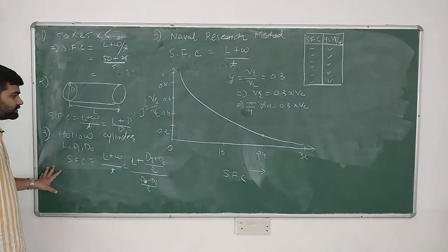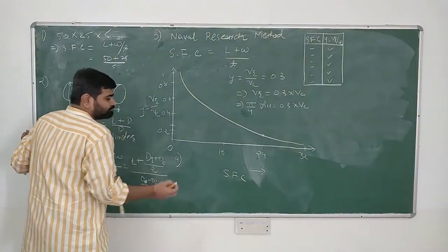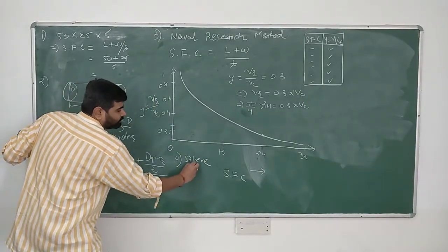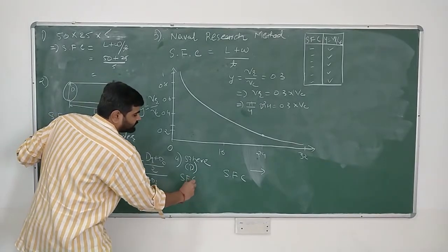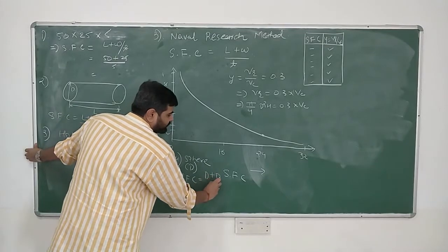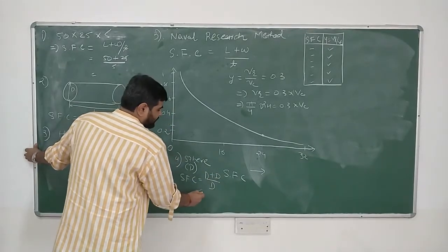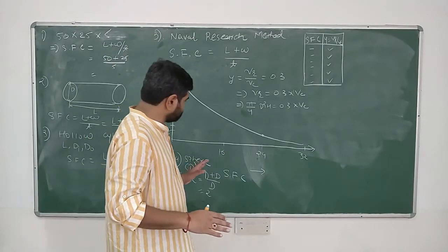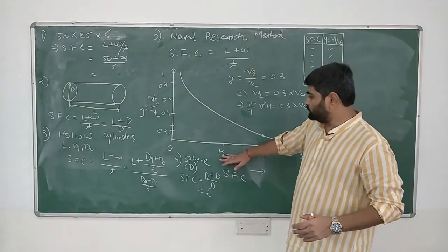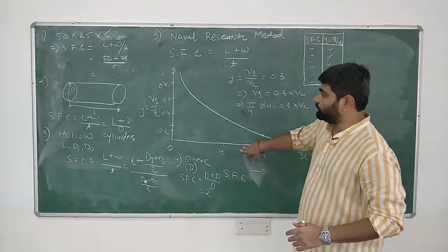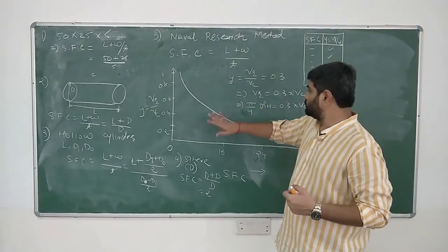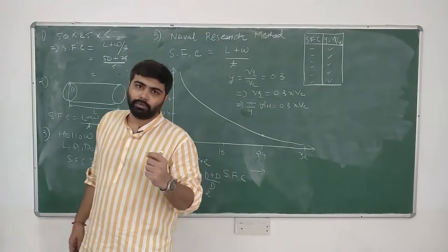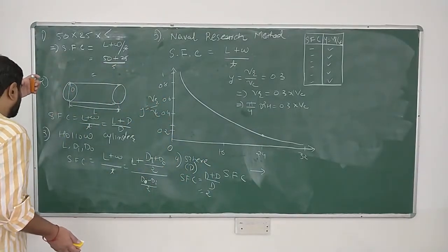For a sphere, the only dimension is diameter d, so length = d, width = d, and thickness = d. Therefore, SFC = (d + d)/d = 2. The shape factor of a sphere is always 2. Once the shape factor is found for any geometry, the corresponding Vr/Vc ratio is looked up and the riser is designed accordingly using the naval research method.